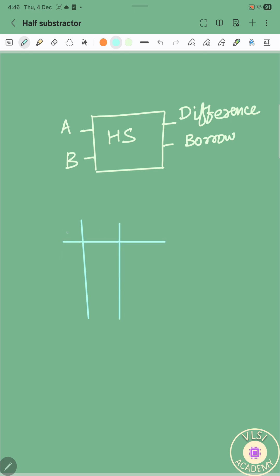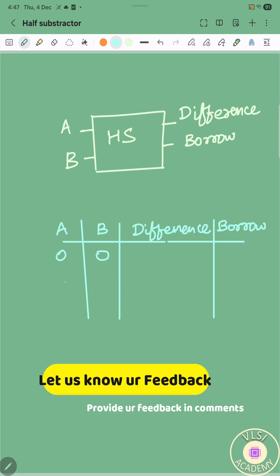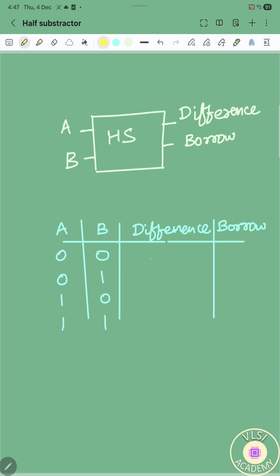Now let us try to draw one truth table with inputs A and B and outputs labeled as difference and borrow. For a 2-bit half-subtractor in binary, there will be 2 raised to the power 2 combinations. When both inputs are 0, then difference and borrow will also be 0.